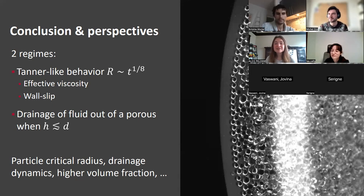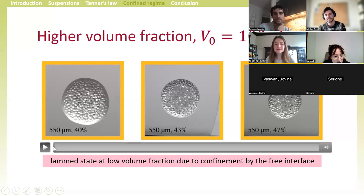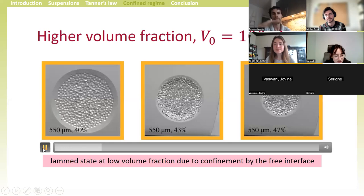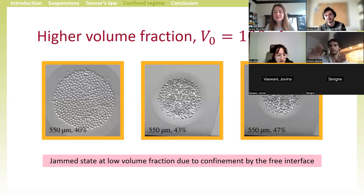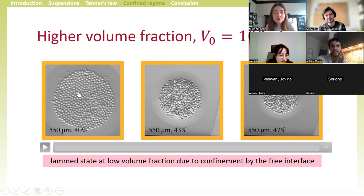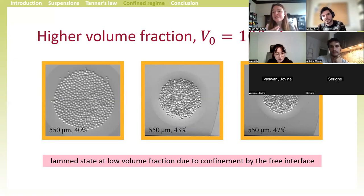Antoine asked about the volume fraction videos: at 40% there is mainly one layer of particles at the edge (two at the center), while at higher fractions like 43-47% it is more like depositing a pile of particles — just a few rearrangements and then no more motion. The fluid cannot drag the particles anymore. He also asked about the rivulet configuration: the rivulet spreads left and right along the substrate, imaged through a flat side wall with laser illumination from below, to avoid optical distortions from curved interfaces.